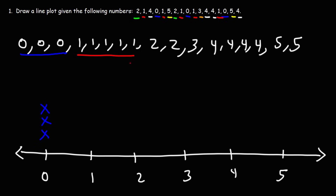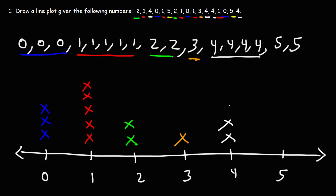We have a total of five ones, and we have two twos, one three, four fours, and then two fives. So that's how we can construct a line plot given a list of numbers.